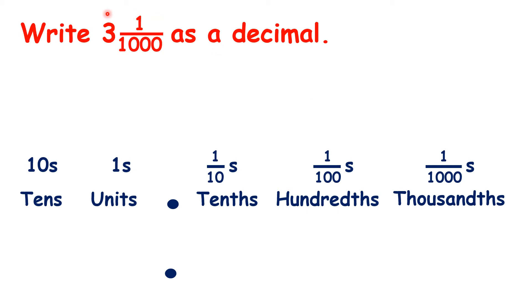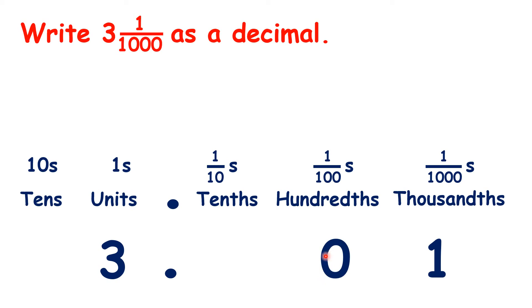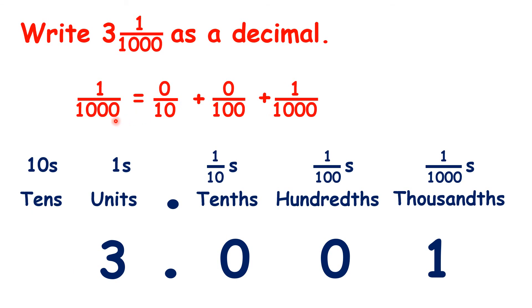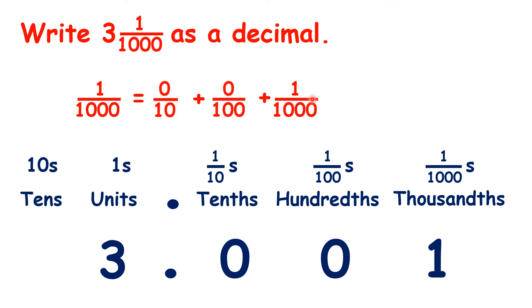How do we write 3 and 1 thousandths as a decimal? We have 3 units, then we have 1 in our thousandths place. But to show that it's in our thousandths place, it needs to be the third digit after the decimal point, so we need 0s in our hundredths and tenths. With decimals, we can think of 1 thousandth as being 0 tenths plus 0 hundredths plus 1 thousandth, because we always need tenths and hundredths before thousandths. As 0 tenths and 0 hundredths are both equivalent to 0 thousandths, they don't change the number, but we always need to think: tenths, then hundredths, then thousandths.